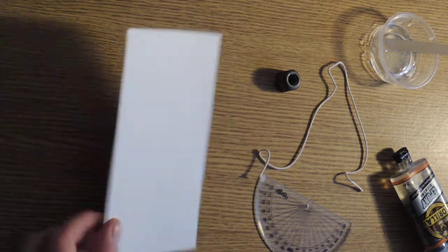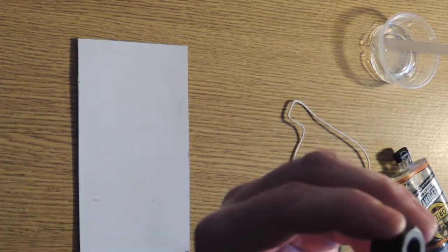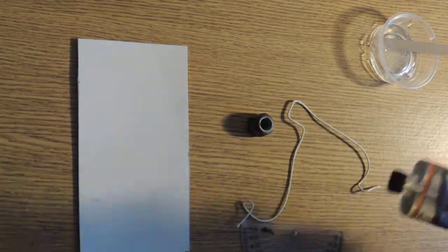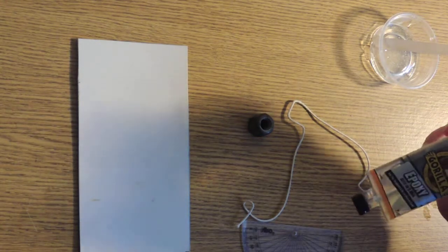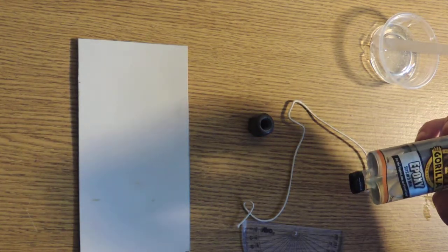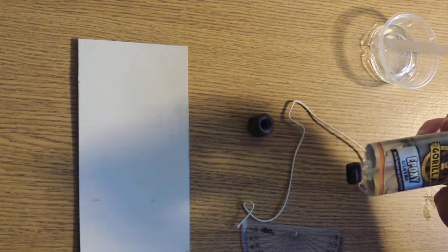I've got a piece of card, a white card, a protractor, a piece of string, a nut. I've got some strong glue. You don't have to use Gorilla epoxy. This is very strong glue. You can use something like Yoohoo or a glue gun if you've got one of those.